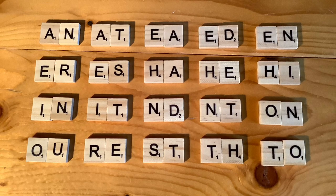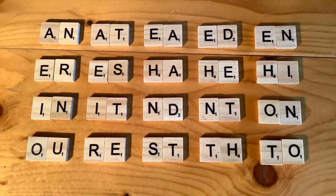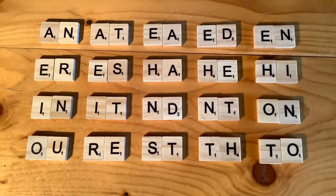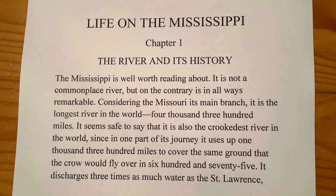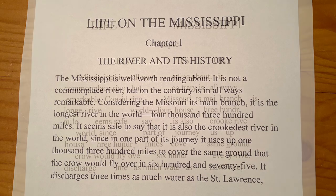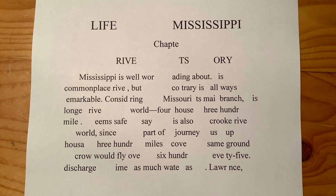If they had used this frequent letter pair list, or one similar, to separate these letter pairs on the typebasket, could it have solved the jamming problem? To test this, we'll use Mark Twain's Life on the Mississippi, which by some accounts was the first novel ever to be typed. Note that if you separate a frequent letter pair on the typebasket, you also separate its reversal. For example, if you separate AN, you're also separating NA. So how often do these frequent letter pairs and their reversals occur in the extract? What we've done here is edit the text, leaving in the letter pairs not covered by the frequent letter pair list.